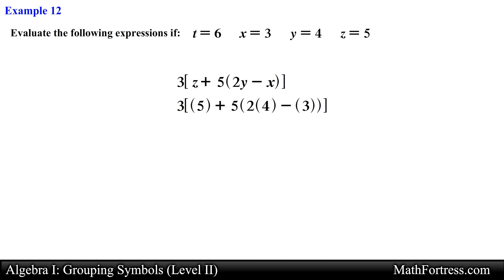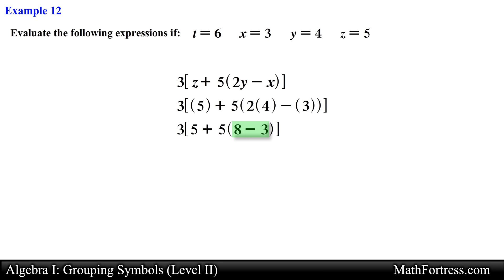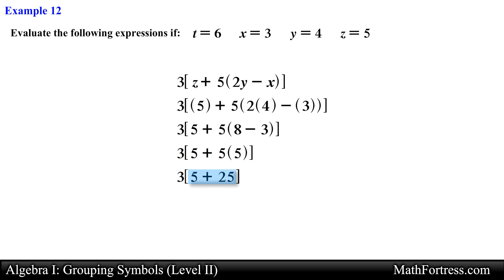We take care of the quantity within the parentheses first. We multiply 2 times 4 which reduces to 8, then subtract 3 which simplifies to 5. Now we simplify the expression within the brackets: we take care of 5 times 5 which simplifies to 25, then add 5 to get 30. Finally we take 30 and multiply by 3 which simplifies to 90.